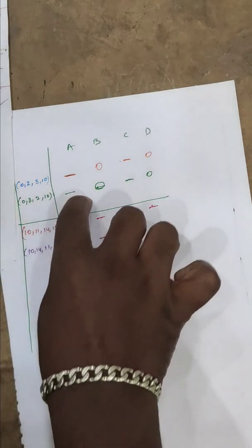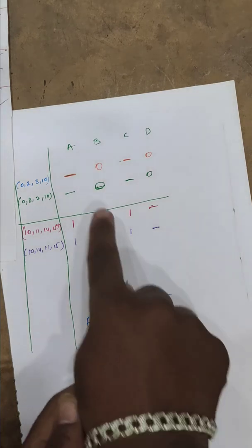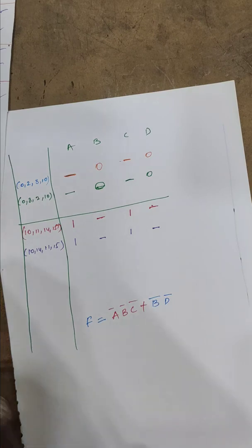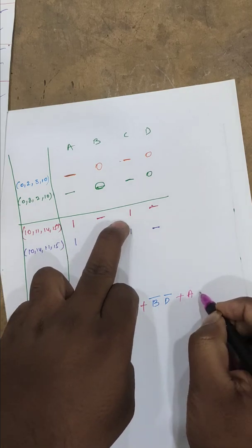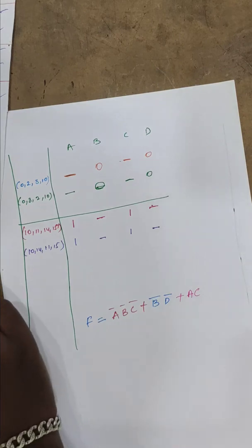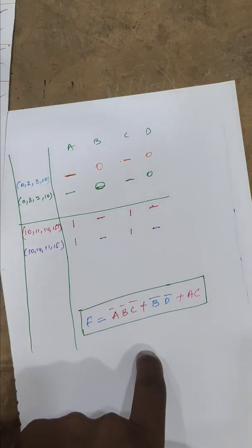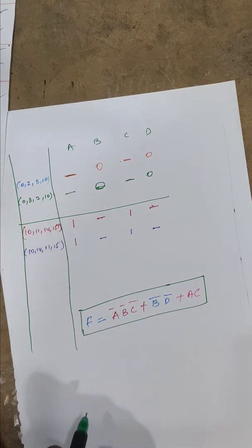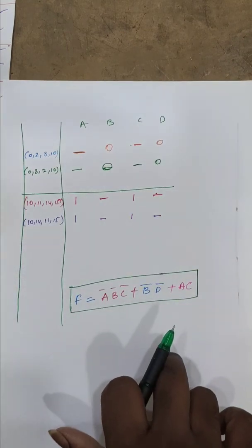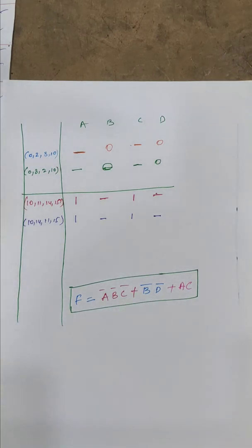Looking at the remaining prime implicants: A is 1, A-bar is eliminated; B is eliminated; C is C; D is eliminated. This gives us the final reduced equation. The answer is my reducer equation. This is the perfect method and the final correct result.